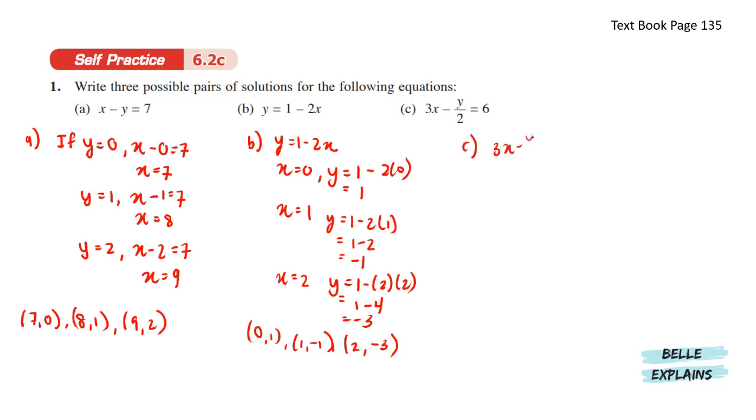Next for C, we have 3x minus y over 2 equals 6. If x equals 1, let's sub that in to find the value of y. Here we get the value of y at negative 6. If x equals 2, we can sub that in and find the value of y, and here we get the value of y at 0.